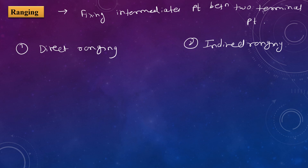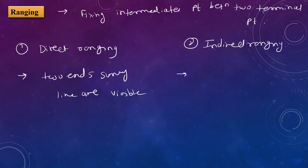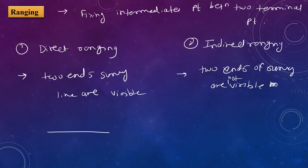In direct ranging, the two terminal points or two ends of the survey lines are visible. If the two ends of the survey lines are not visible, we use indirect ranging. Indirect ranging is also known as reciprocal ranging. Direct ranging is done on a horizontal surface; if ranging is done on a curved surface, indirect ranging is used.